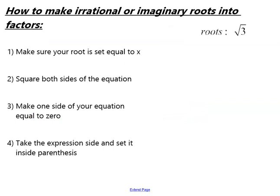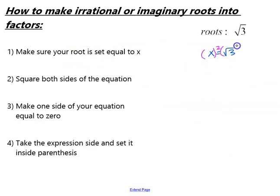Now let's take a look at how we're going to make irrational or imaginary roots into factors. When you're given a root, your very first step is to set your root equal to x. So let's take this and make it x equals square root of 3. Step number 2, we're going to square both sides of the equation. Make sure that you put each side in parentheses, because it's going to make a really big difference depending on what roots you're given. As we simplify, x squared is just x squared.